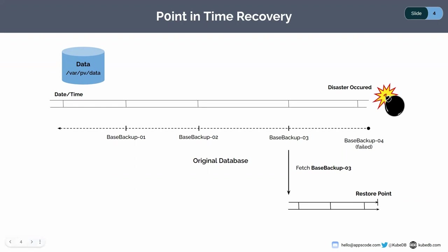Let me explain how we're going to lose data. In this image, the last successful base backup was 0.3 and 0.4 has failed. If we want to recover with base backup only, then we are going to recover only till base backup 0.3, and we are going to lose all the data written after this base backup 0.3. If we want all the data until the disaster point, we can't recover with only the base backup.